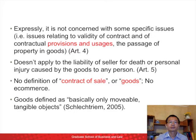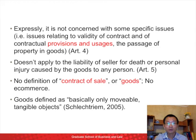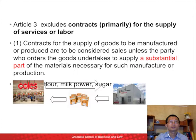The Convention does not define 'contract of sale' or the term 'goods.' Basically, goods can be defined as movable, tangible objects, but not all authorities agree. Article 3 of the Convention also excludes contracts for the supply of services or labor, or contracts whose primary component is the supply of services or labor.